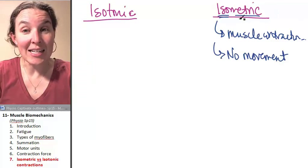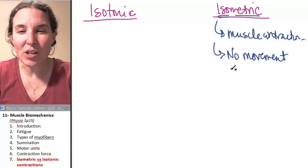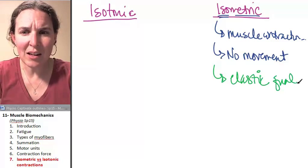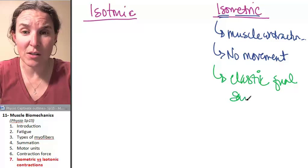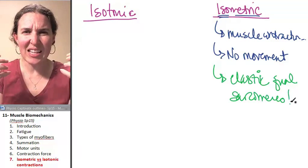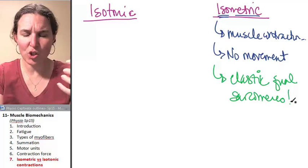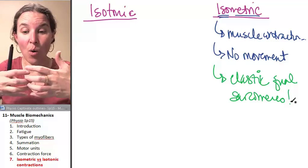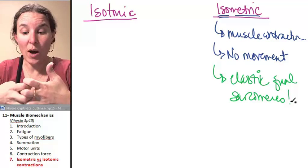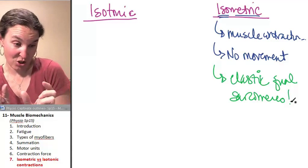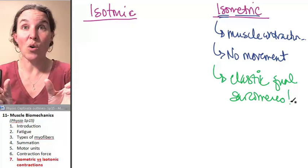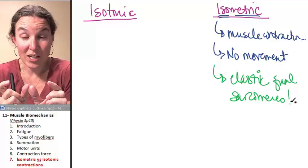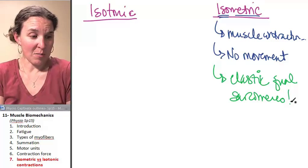That is considered an isometric contraction. Isometric contractions happen because of elastic qualities of the sarcomeres. There are actually these little elastic structures running through the sarcomeres, and we didn't even talk about those guys, but they allow for some extra stretching where we can end up attempting to contract, and we can stretch on the edges so that ultimately there's no shortening of the muscle because all we've done is actually just stretched out some ends of our sarcomere.